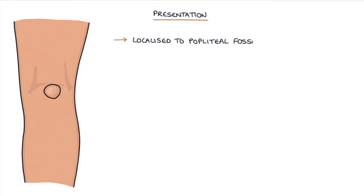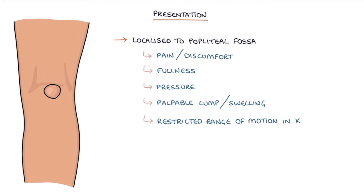Patients may present with symptoms localised to the popliteal fossa, including pain or discomfort, fullness at the back of the knee, pressure, a palpable lump or swelling, and restricted range of motion in the knee when there's a larger cyst.